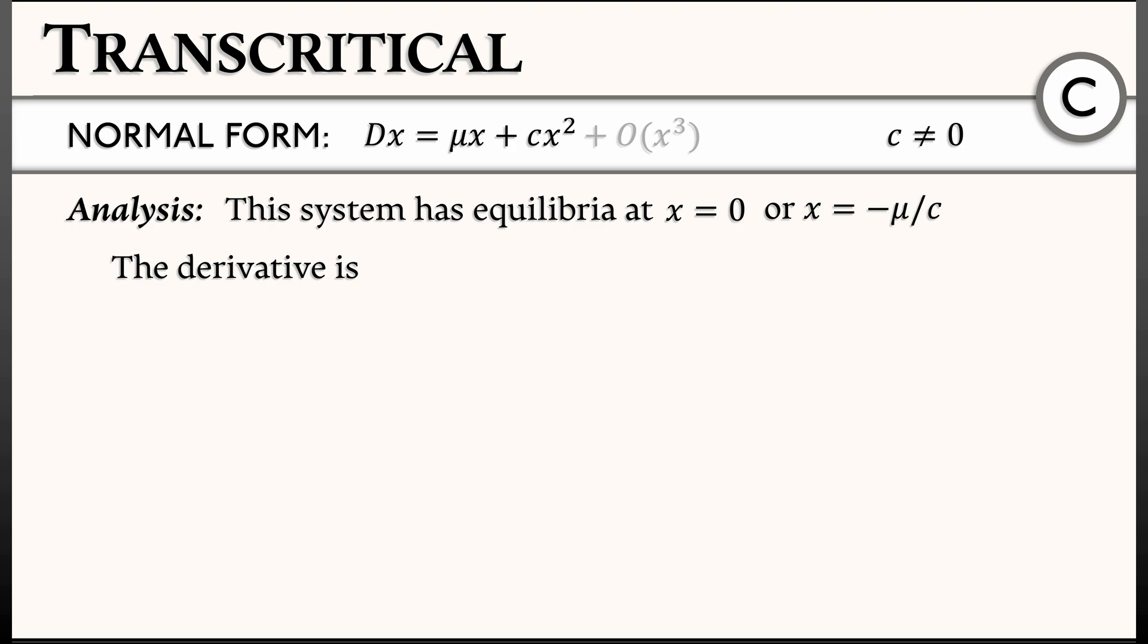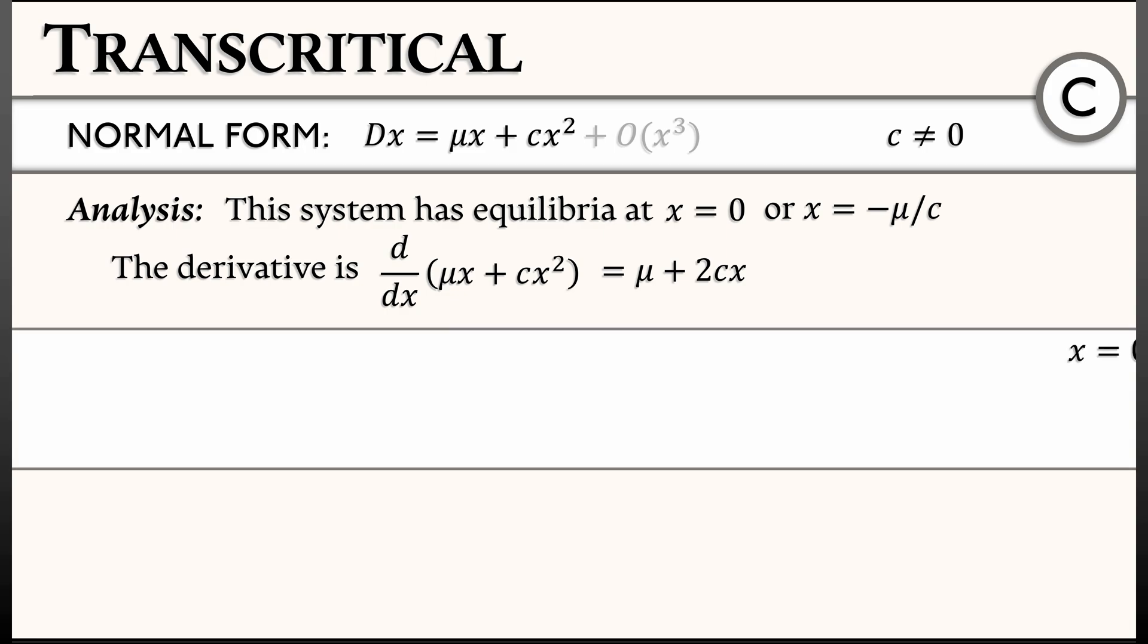Let's do a stability analysis. We have to take the derivative of the right-hand side. That is the derivative of mu x plus c x squared. That gives us mu plus 2c x. So we can very easily classify these equilibria. First, at x equals zero, this derivative evaluates to mu.